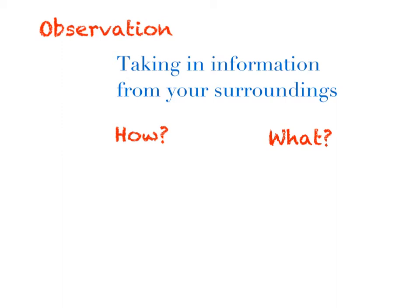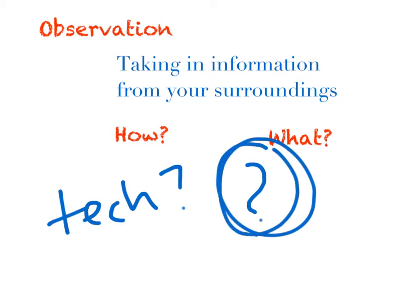Observation, or the act of observing, is when an individual documents information about the natural world around them. How does one document information? What information does one document? Well, that all depends — what technology do you have, what question are you trying to answer, what senses are you using to observe, and what info do you need to obtain or record? All are great questions and all lead us to a greater understanding of this critical scientific practice known as observation.